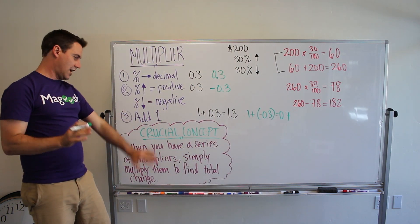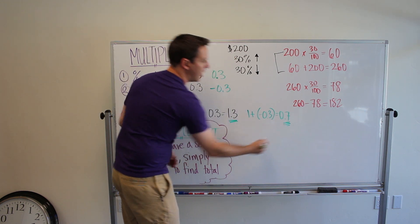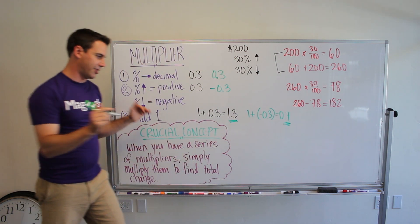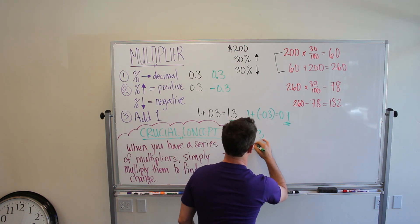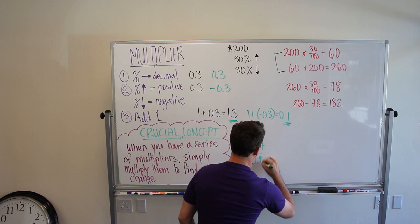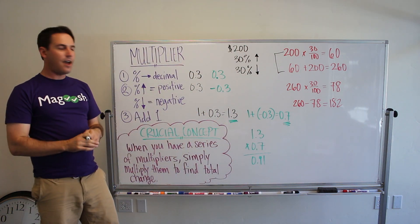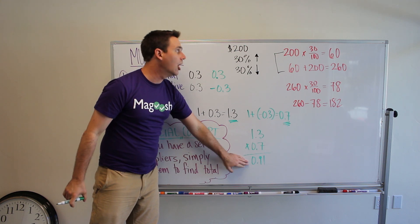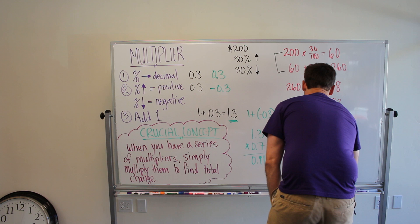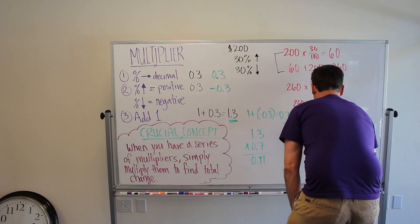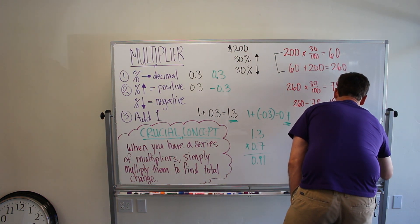So, we take our two multipliers — 1.3 and 0.7 — and multiply them together: 1.3 times 0.7 gives us 0.91. Now all you have to do is take this combined multiplier and multiply it by the original number, 200, and you'll get the same answer: 200 times 0.91 equals 182.